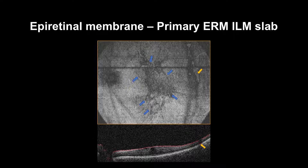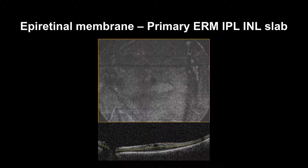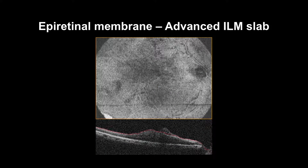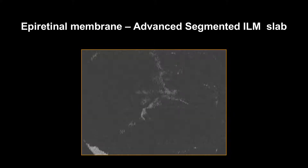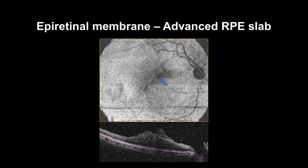Please note the masking and blink artifacts. The IPL-INL slab will show mainly the intraretinal cystic changes if they exist. In some cases, segmentation adjustment is needed to reveal the true extension of the epiretinal membrane. In some severe cases, the epiretinal membrane will induce projection artifacts on the RPE.